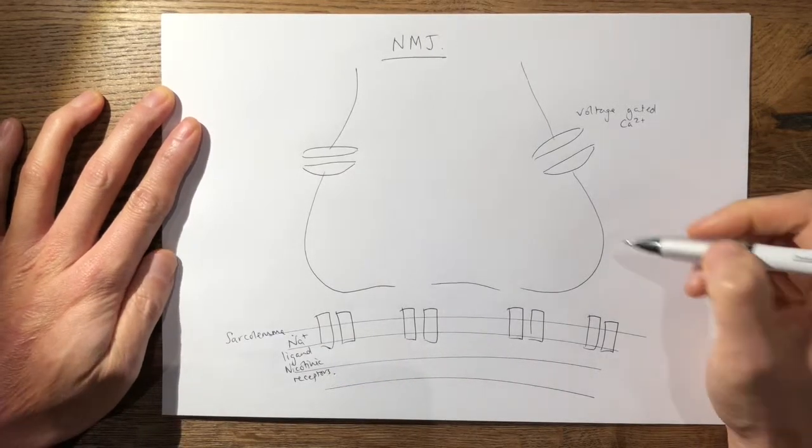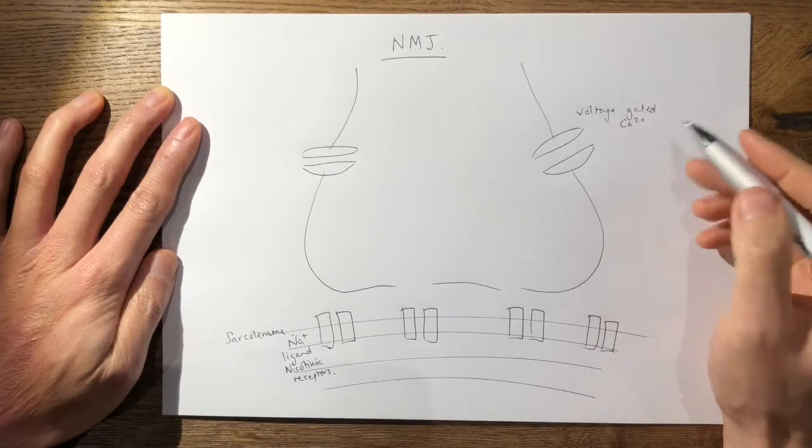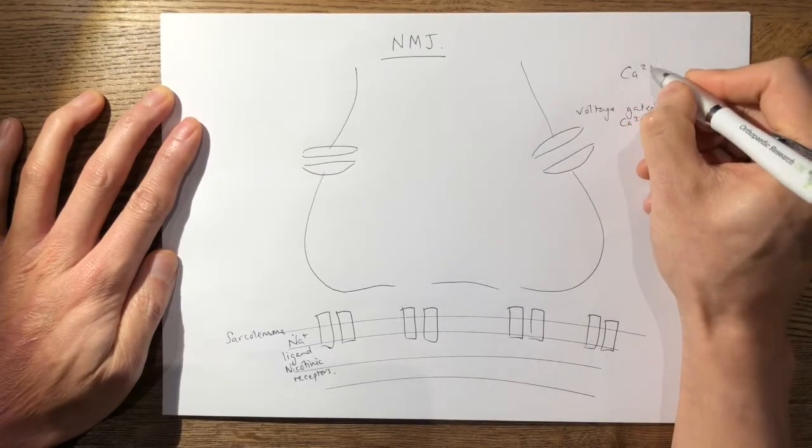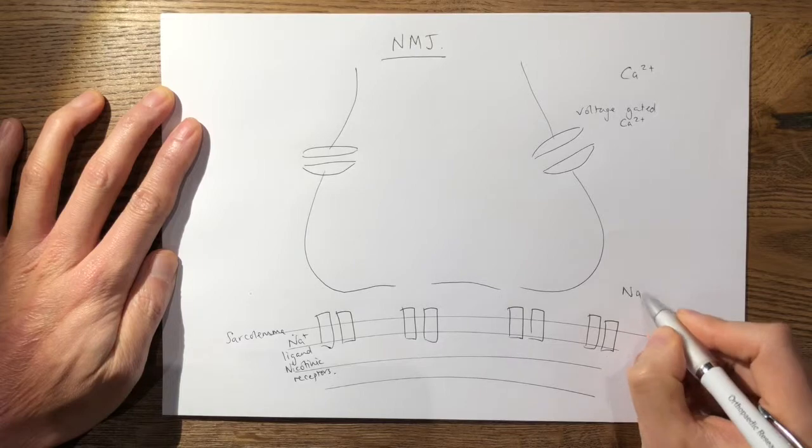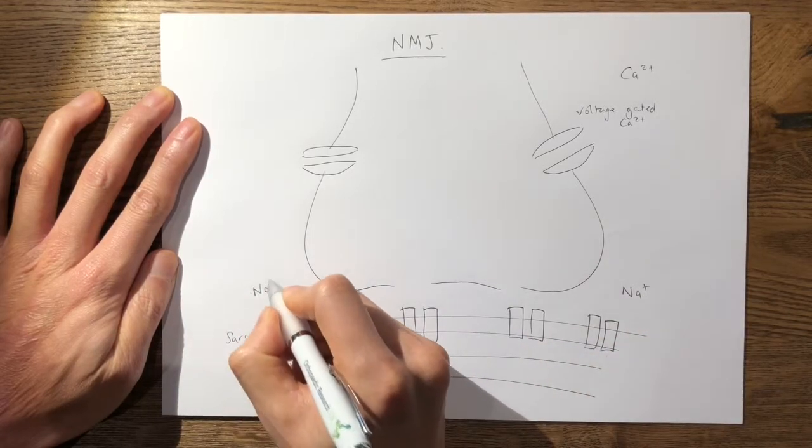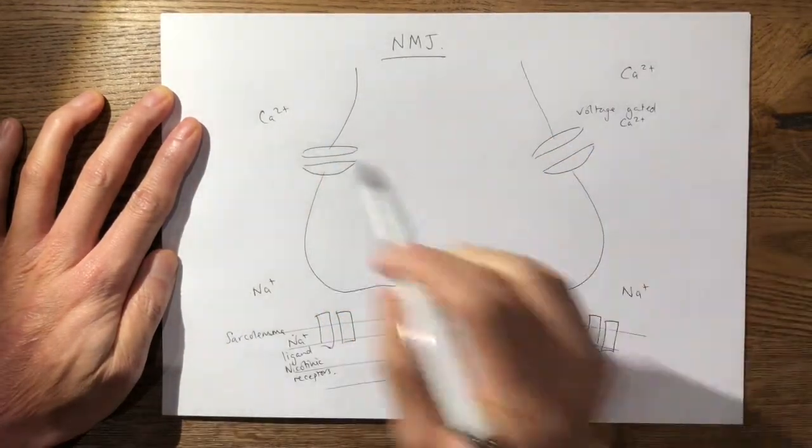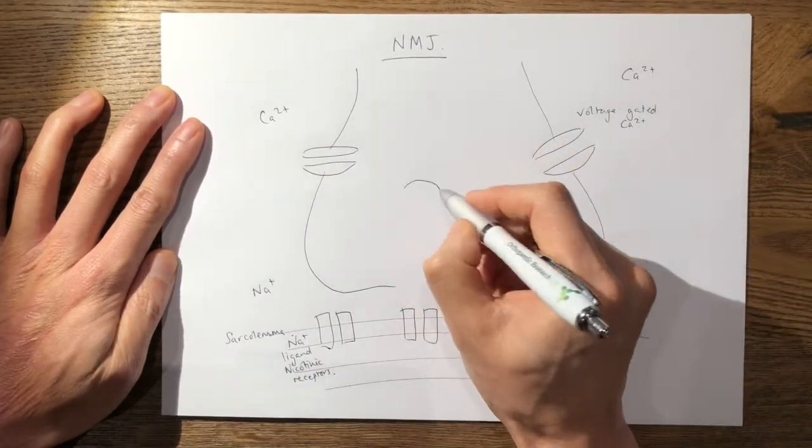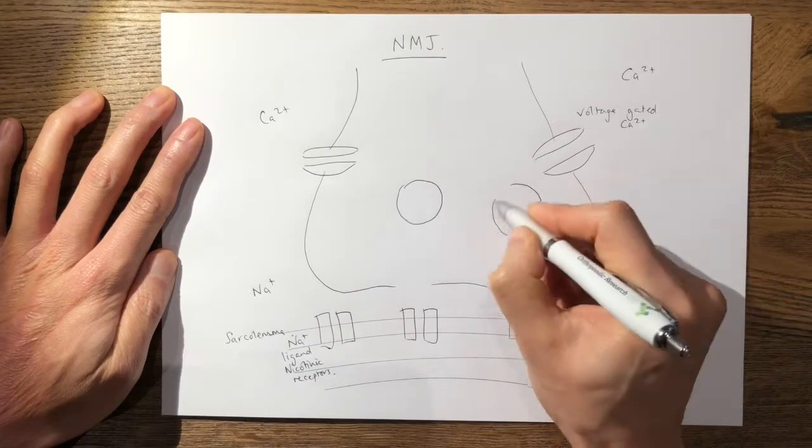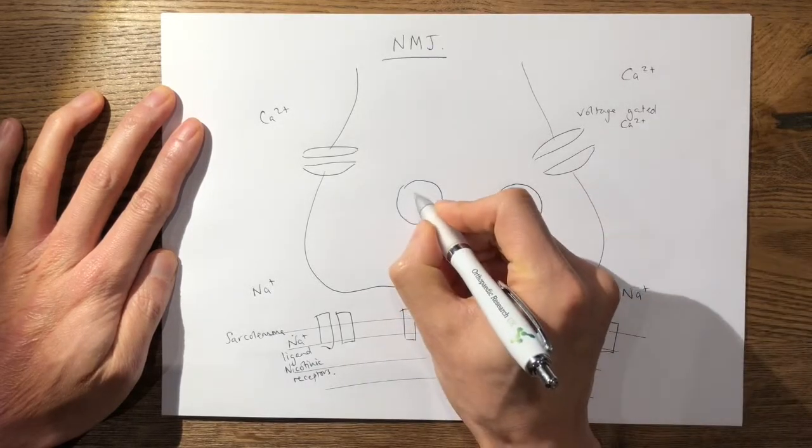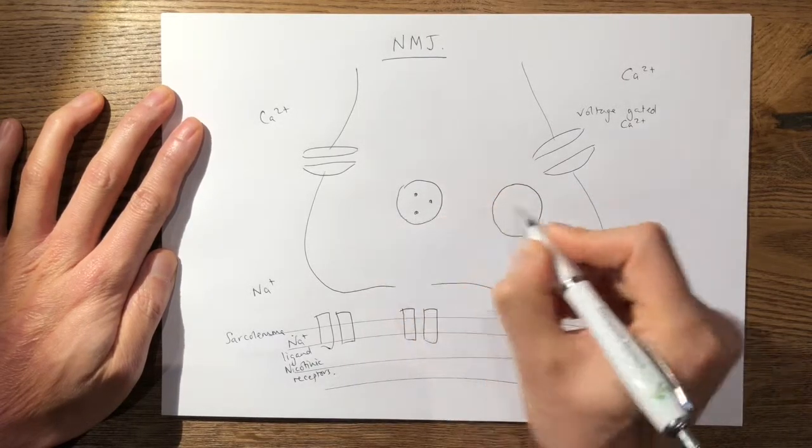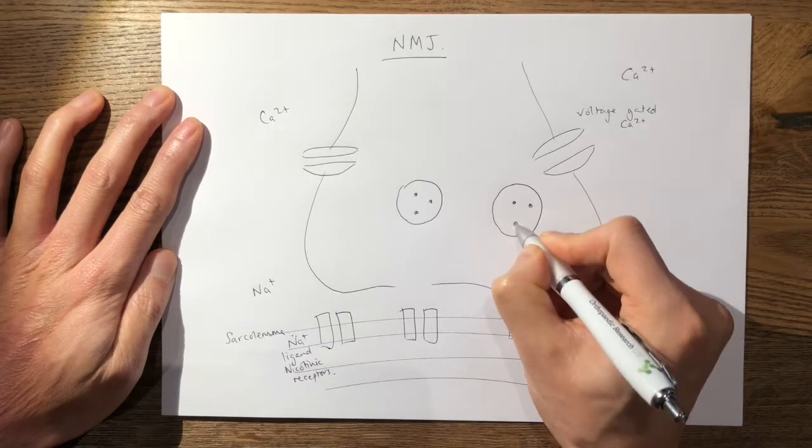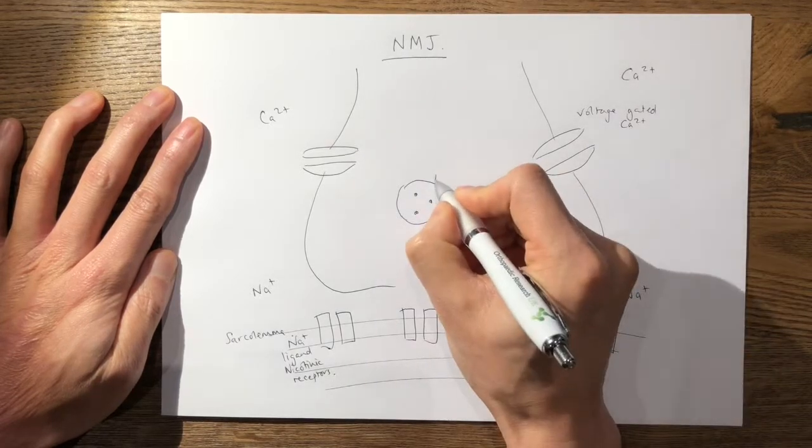Now at rest you have a higher concentration of calcium and sodium on the outside so that's important to note. Within your motor end bulb you also have these vesicles and these vesicles contain a neurotransmitter and the neurotransmitter for skeletal contraction is acetylcholine.